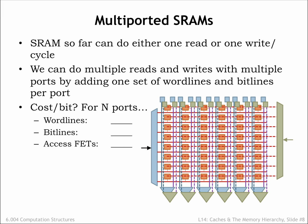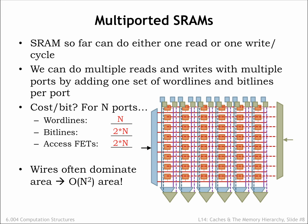With an N-port SRAM, for each bit we'll need N word lines, 2N bit lines, and 2N access FETs. The additional word lines increase the effective height of the cell and the additional bit lines increase the effective width of the cell, so the area required by all these wires quickly dominates the size of the SRAM. Since both the height and width of a cell increase when adding ports, the overall area grows as the square of the number of read-write ports. So one has to take care not to gratuitously add ports, lest the cost of the SRAM get out of hand.